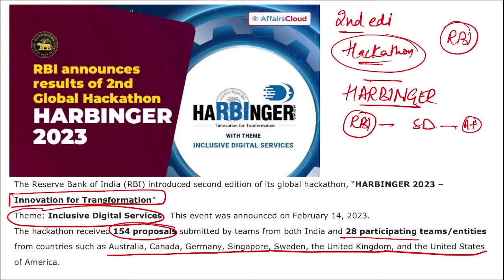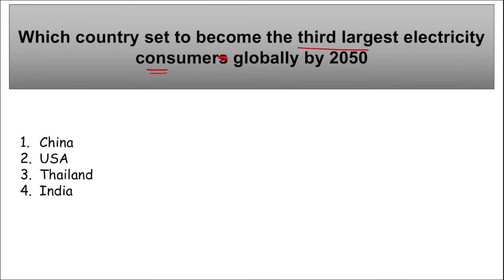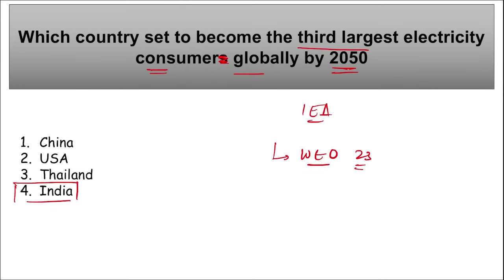According to data recently released by IEA — International Energy Agency — in their report World Energy Outlook 2023, India will become the third largest electricity consumer globally by 2050. The report discusses energy consumption and usage of fossil fuels. It presents a sustainable change in the global energy system by 2030, noting that no new fossil fuel projects will be coming up while investment in green and renewable energy is expanding.